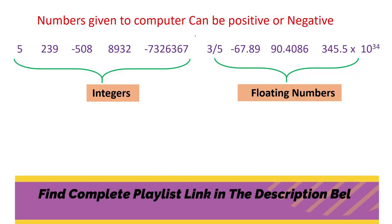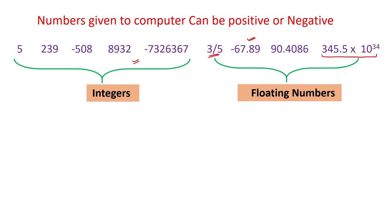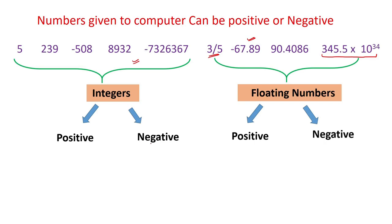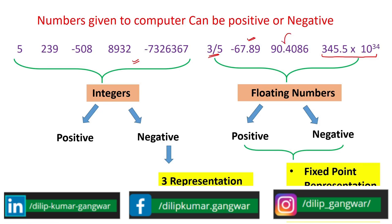In programming or mathematics we have integers and floating point numbers. Integer numbers can be positive or negative; same way floating point numbers can also be positive or negative. For negative integers we have three representations: sign magnitude, one's complement, and two's complement. For floating point numbers we can use two different representations: fixed point representation and IEEE 754 representation. In this video we will understand fixed point representation, and in the next video we will discuss IEEE 754.